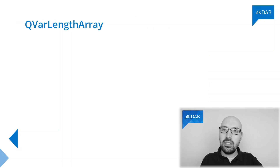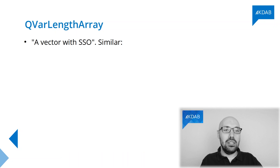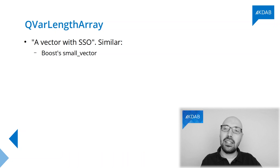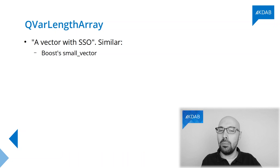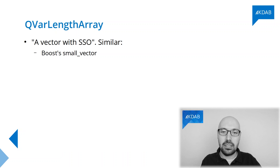Does this container exist elsewhere, or is it just a Qt-specific thing? It does exist elsewhere — it is commonly found all over the place. There is an implementation called small_vector inside Boost, and there are many other implementations in many other C++ projects. That's because avoiding an allocation in a hot code path is something that people really want, so this kind of container has been reinvented all over the place.